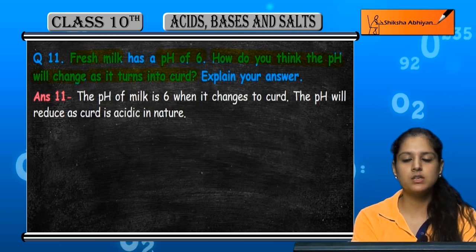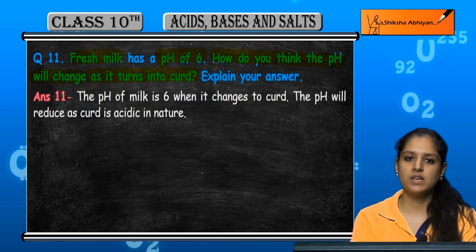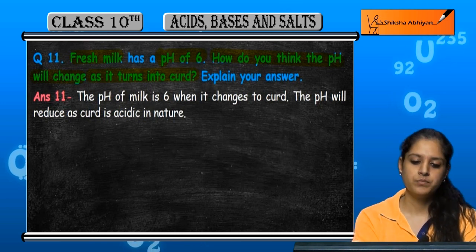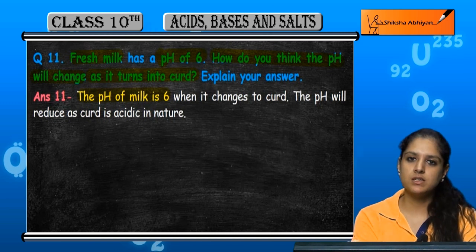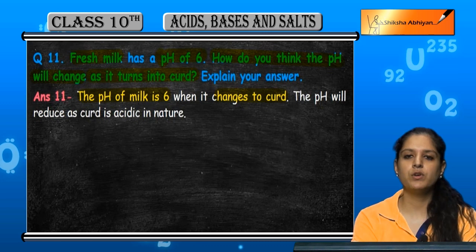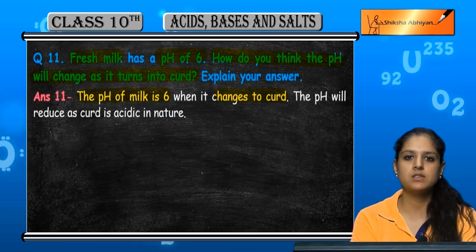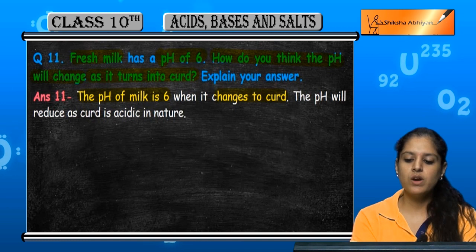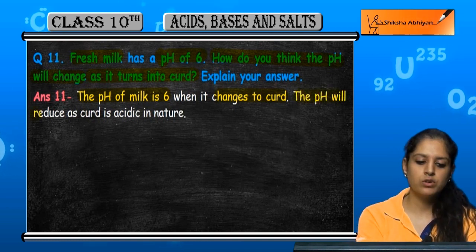The pH of fresh milk is 6. When it is converted into curds, the curds is an acidic substance — it is acidic in nature, so the pH of 6 will reduce.